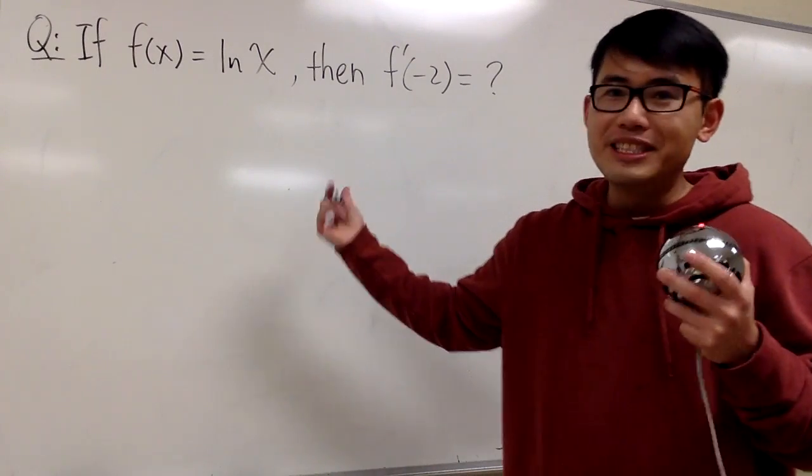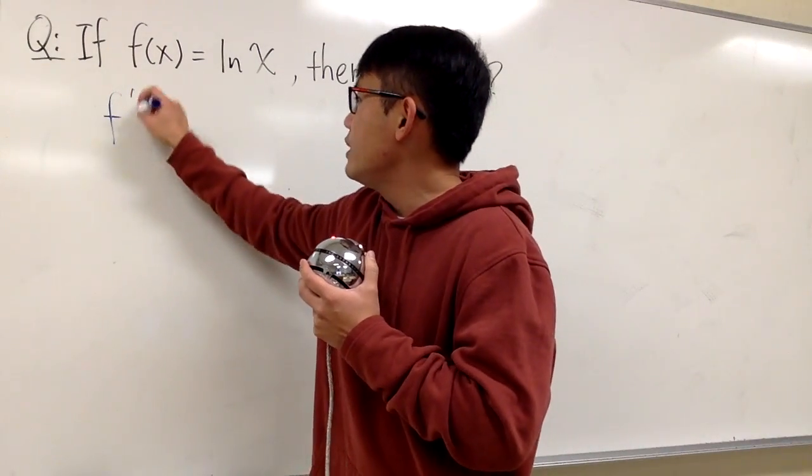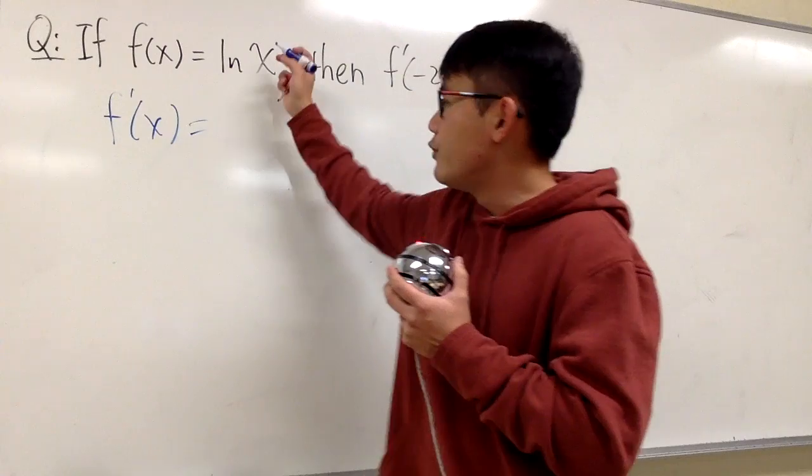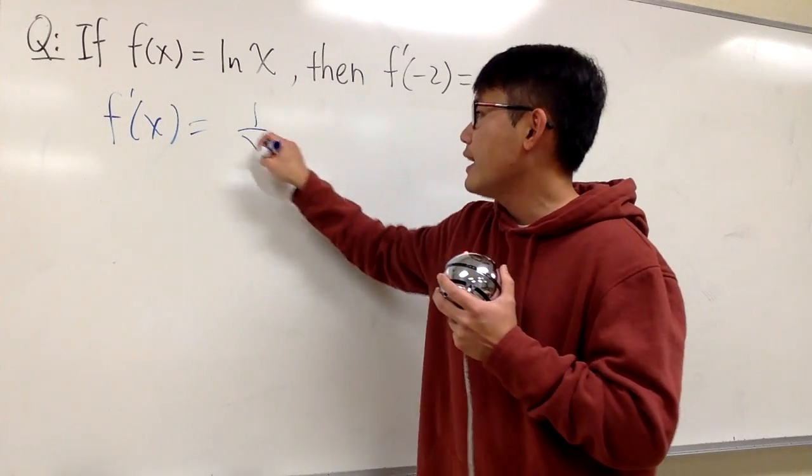Well, you may think that this is going to be so easy, right? Because, of course, we can totally differentiate ln x, and when we differentiate that, we get what? 1 over x, right?